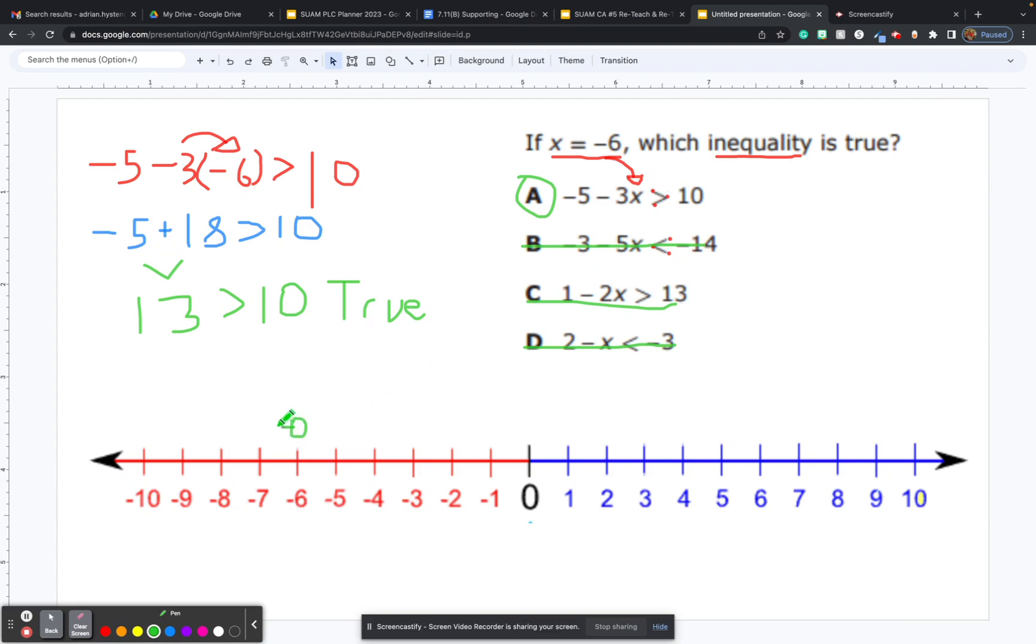We know that negative 7 works. And if you try negative 8, it will continue to work. In fact, all numbers this direction will work. So we're going to indicate that by having an arrow going to the left.